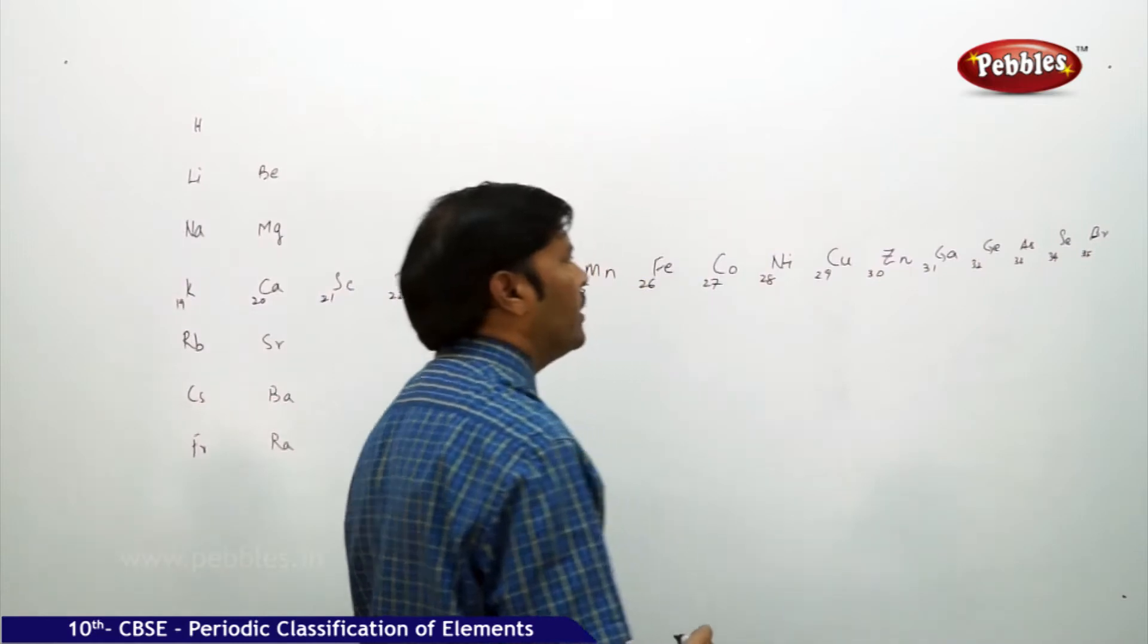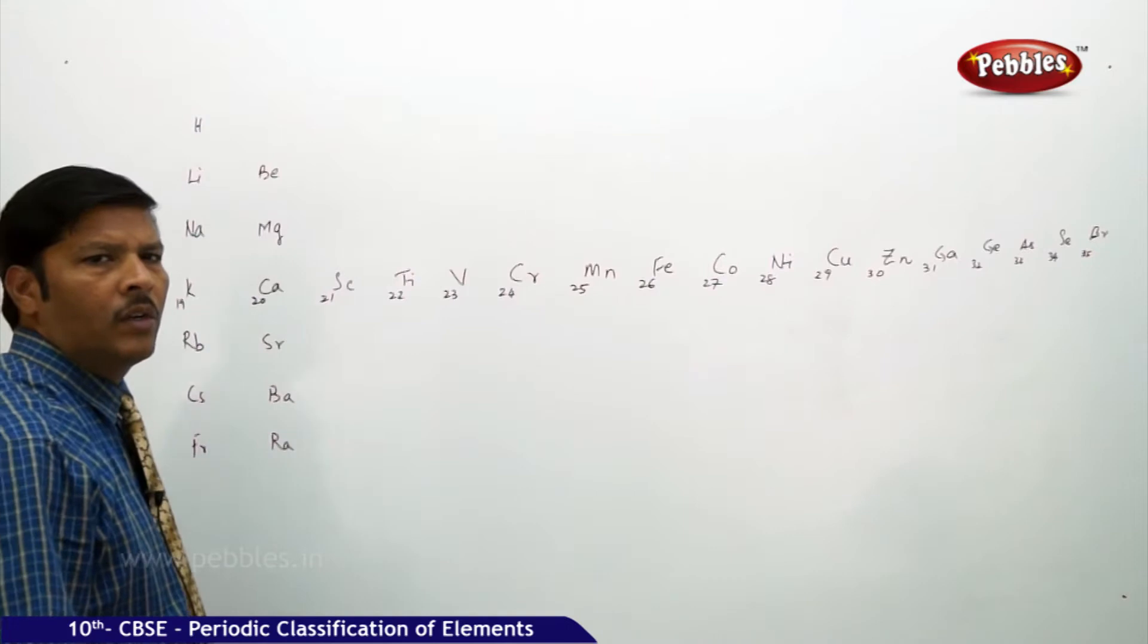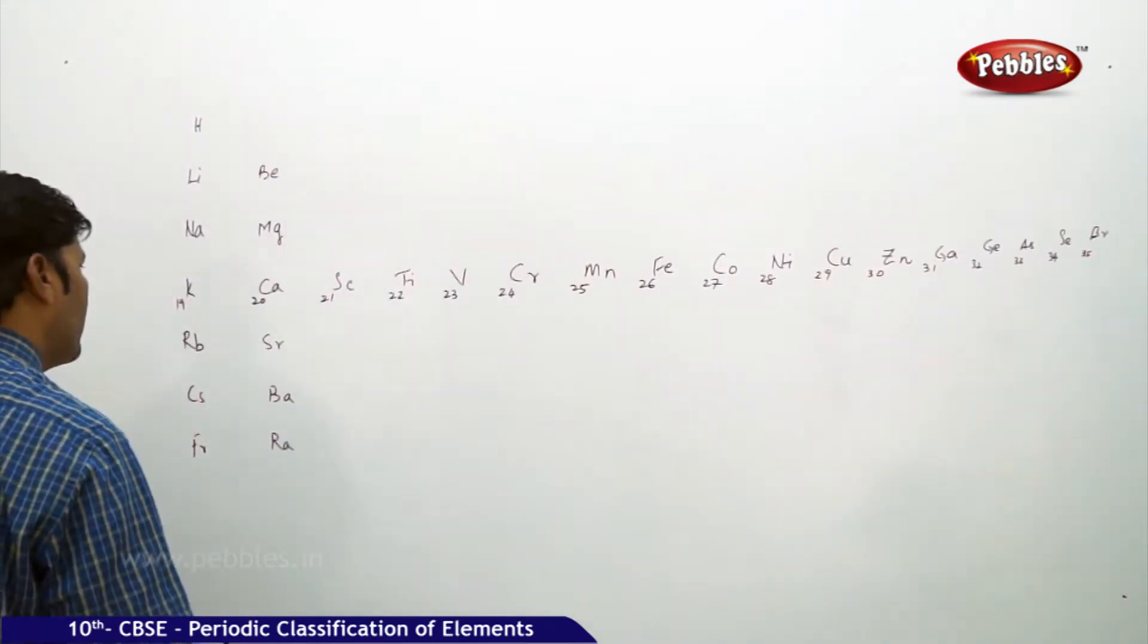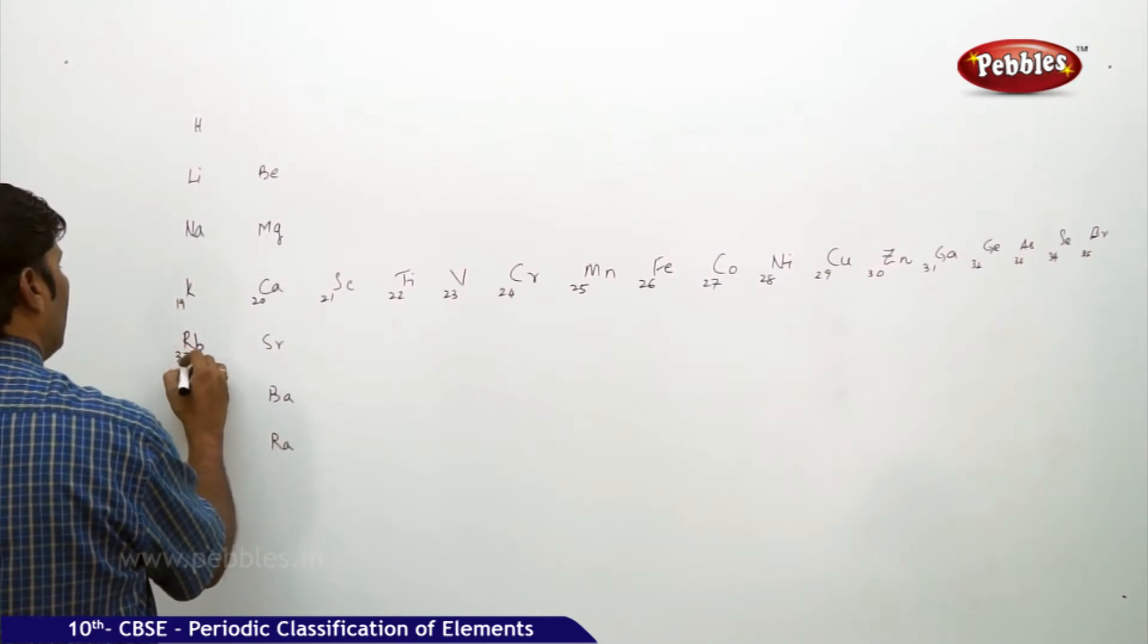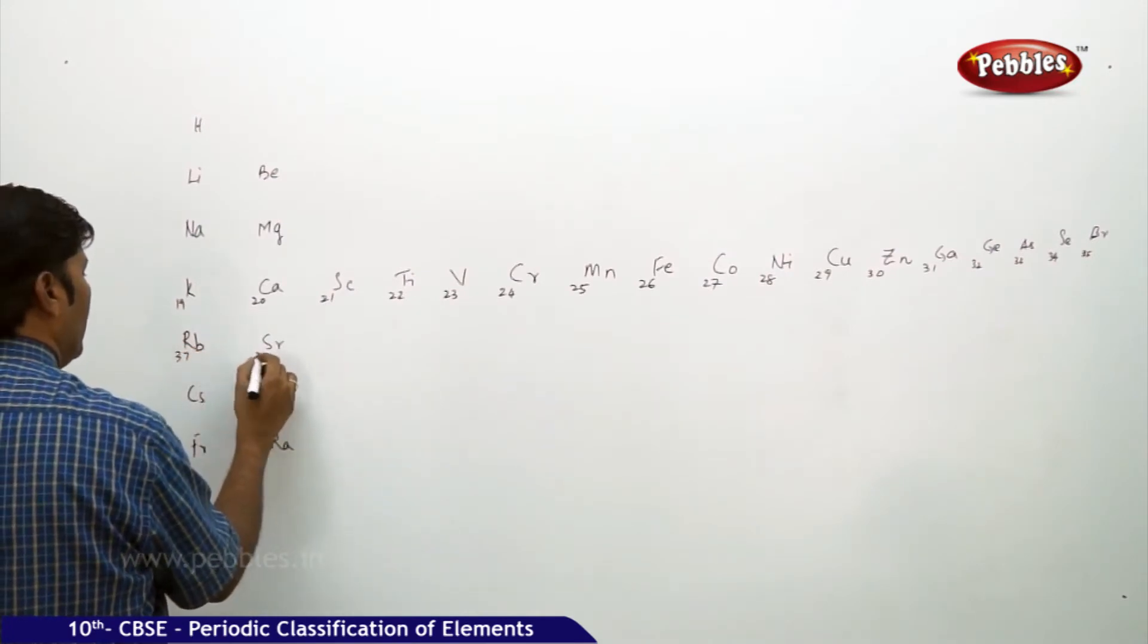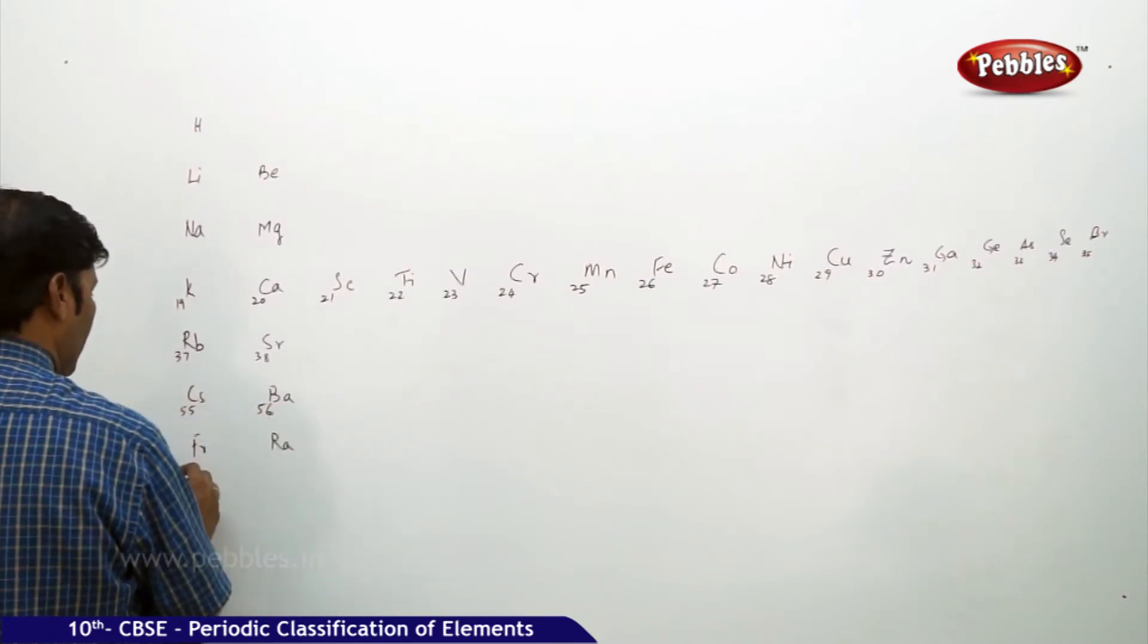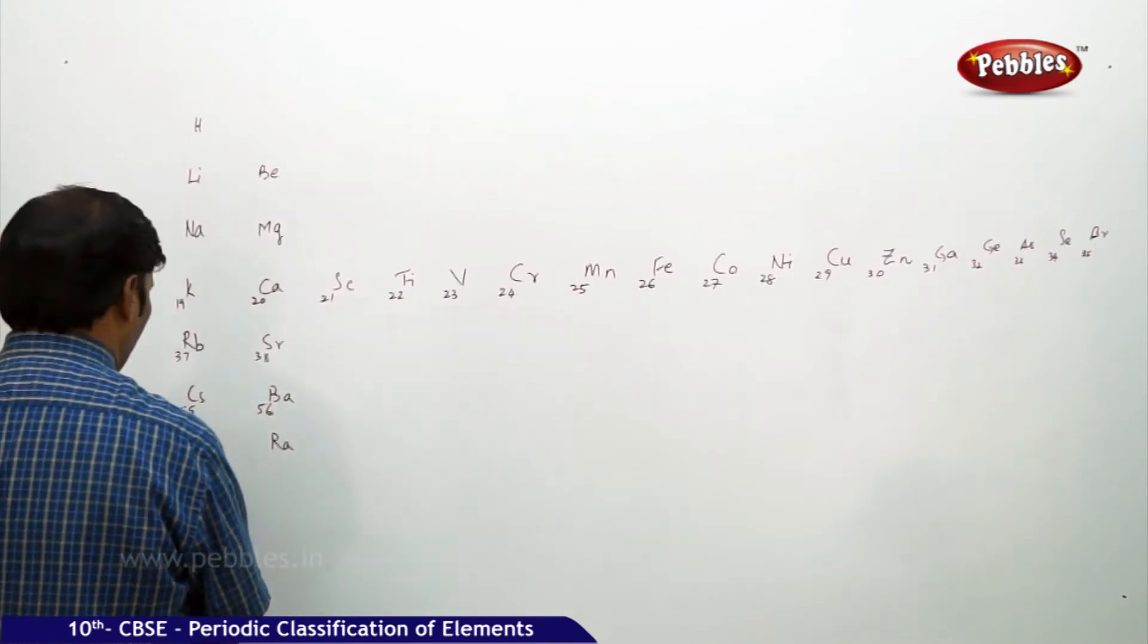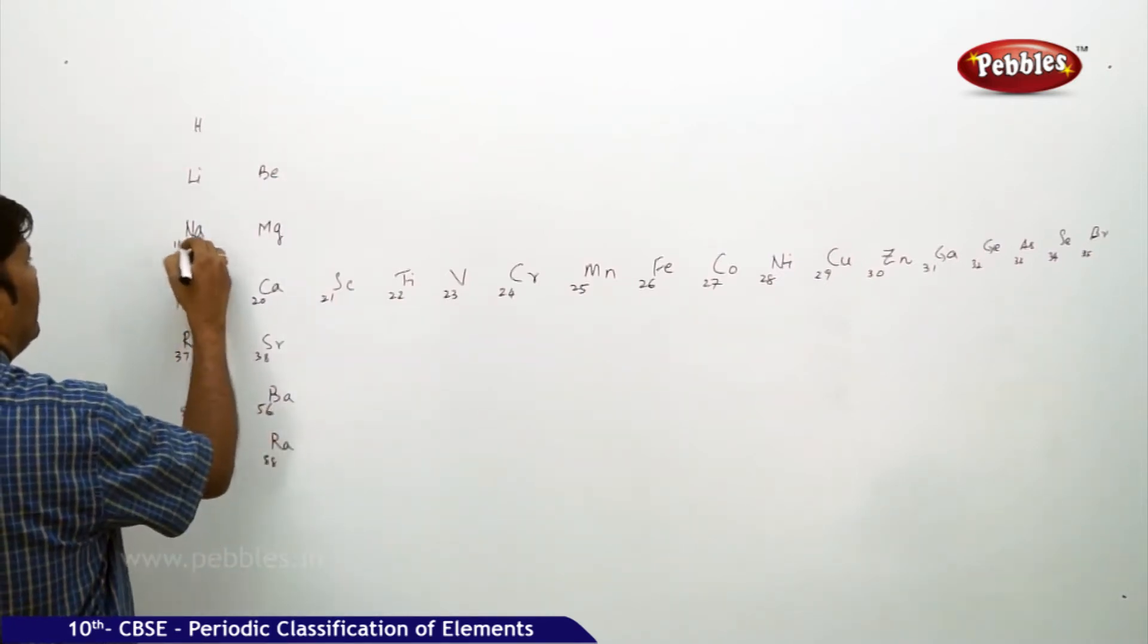What we're noticing here is Rubidium 37, Strontium 38, and Cesium 55 and Barium is 56. This is 55 plus 32, 87 and this is 88.